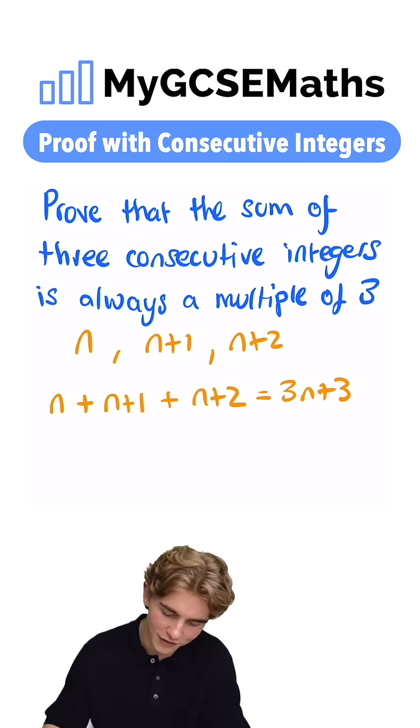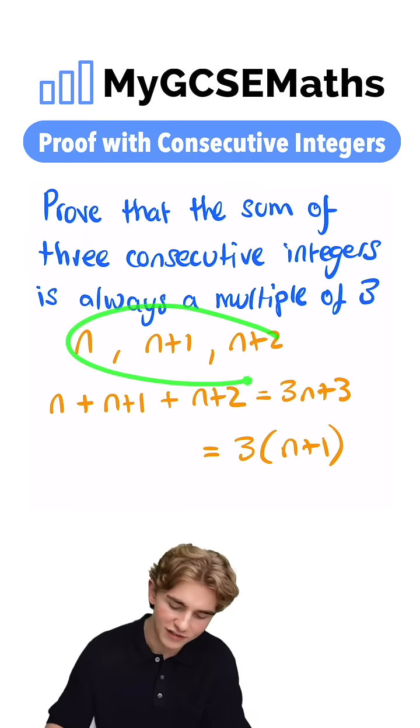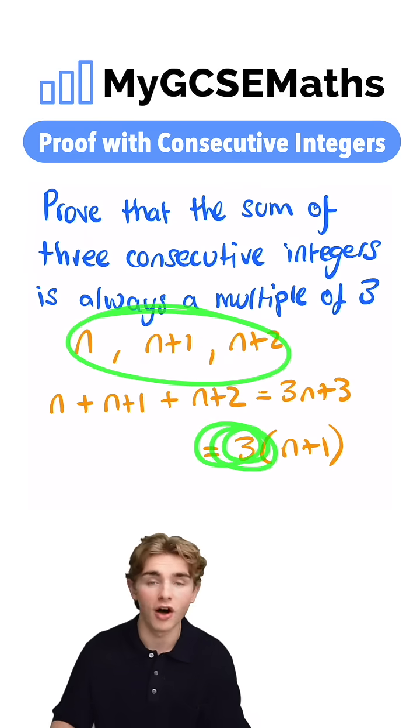Pulling out a factor of three, we can write this as three times by n plus one. That's going to show that the sum of three consecutive integers is a multiple of three.